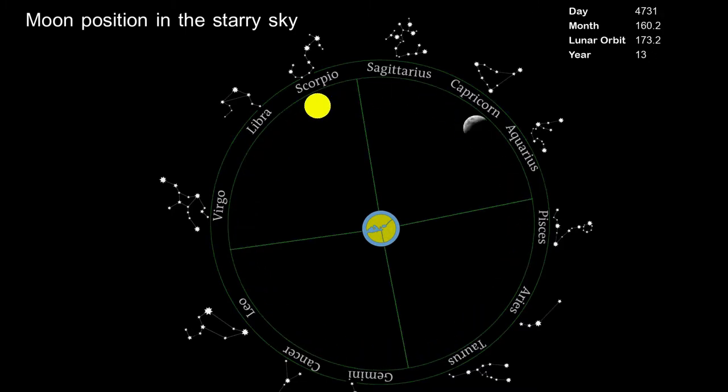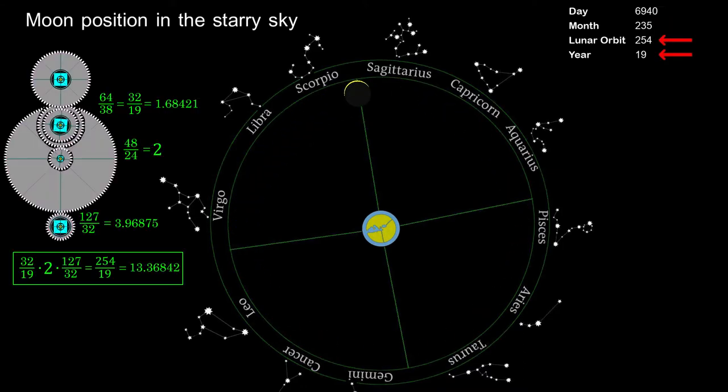After 19 solar years it is however that the moon stands practically again at the same position as in the beginning. Therefore in 19 solar years the moon quite exactly turns 254 times around the earth which appears to us as 235 months. This connection was already known in ancient times and is modeled here in the Antikythera mechanism using gear wheels.